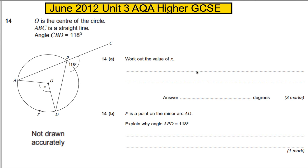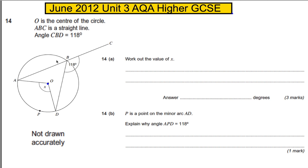Question 14 is a question on circle theorems. O is the center of the circle, and ABC is a straight line. Since angles on a straight line add to 180°, and angle CBD is 118°, we can work out that angle ABD must be 62 degrees.